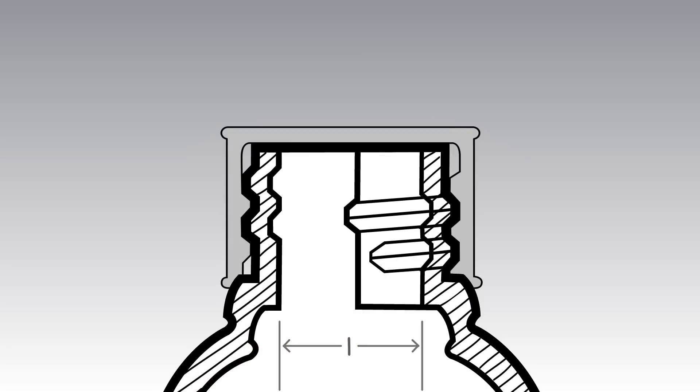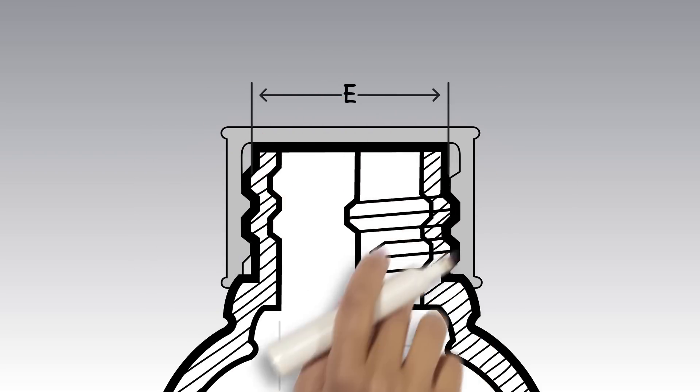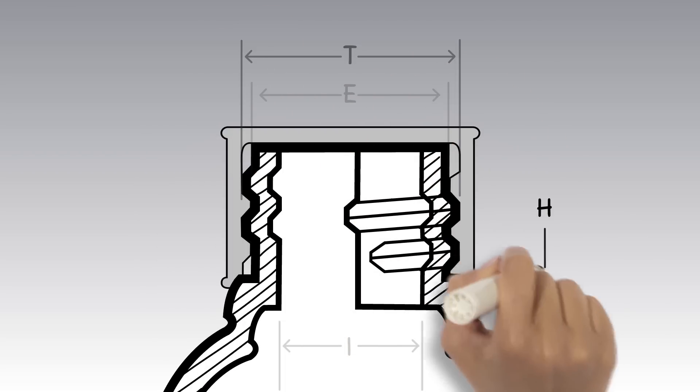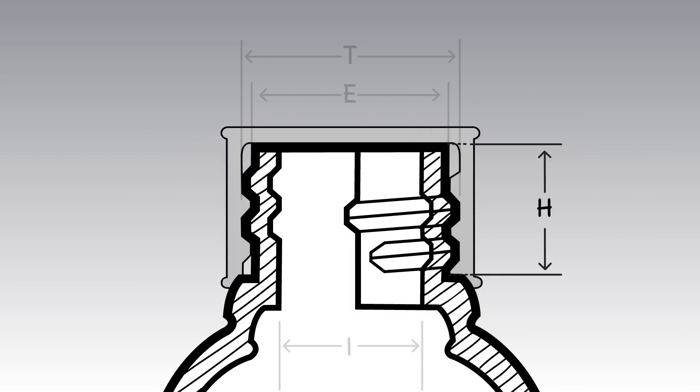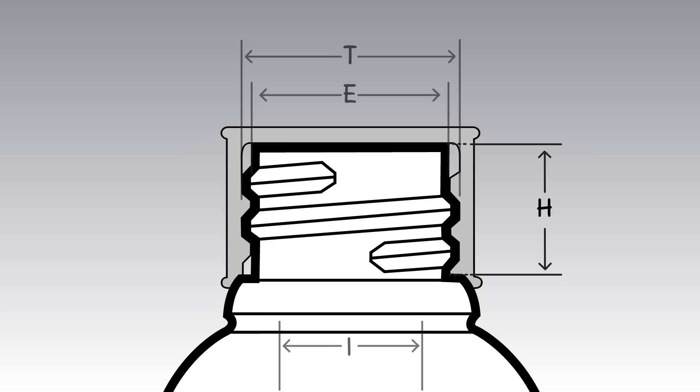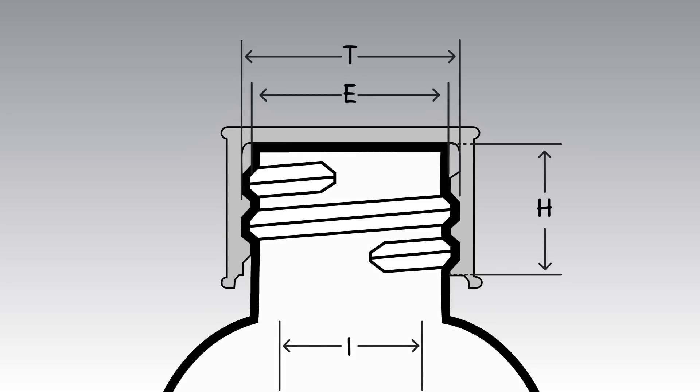E is the outside finish wall diameter, T is the thread diameter, and H is the top of the finish or ceiling surface to the top of the bead. On beadless designs, those designs that do not have a defined ring at the bottom of the finish, this dimension is measured from the ceiling surface to the bottle shoulder.